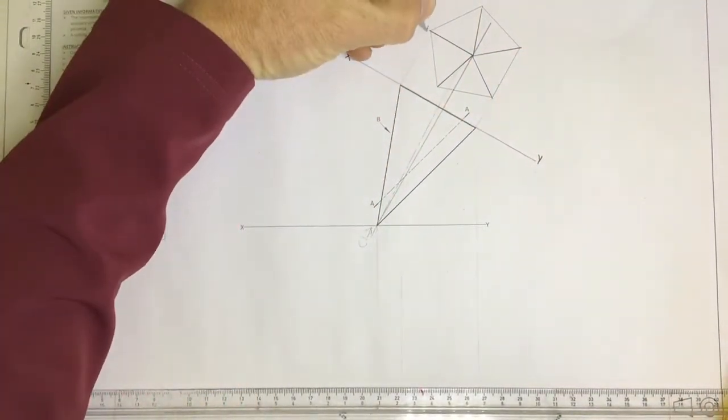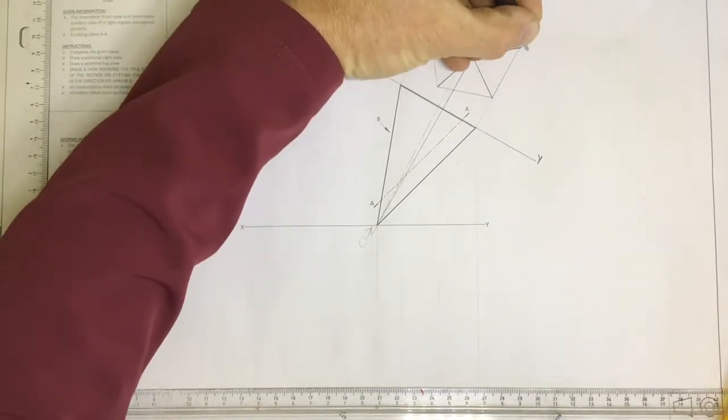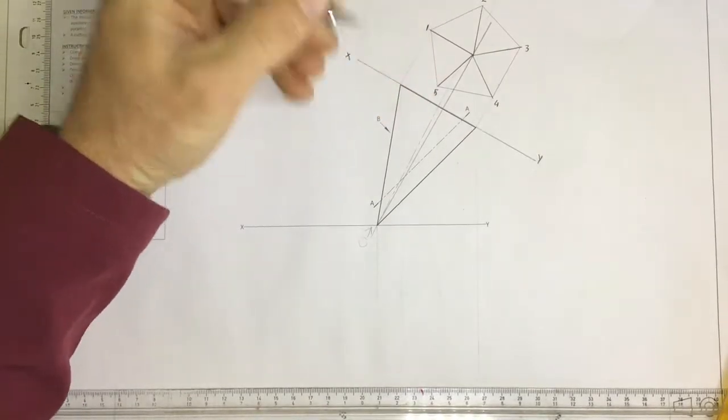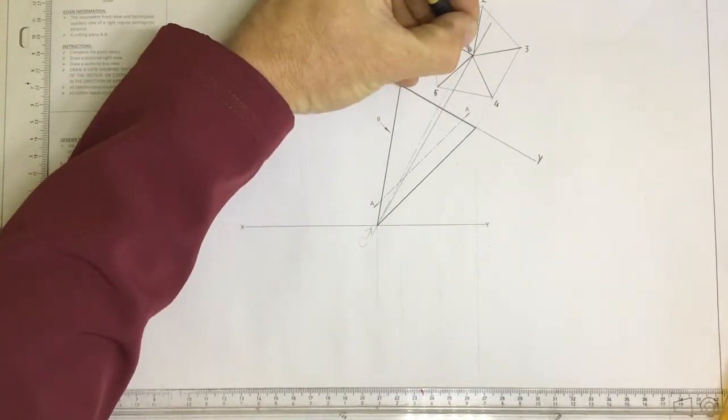I'm going to label that as number one, number two, number three, number four, and number five. Apex, I always label that as zero.